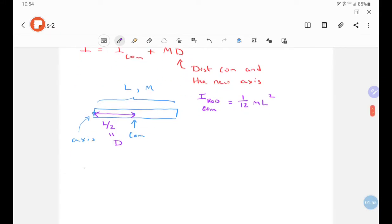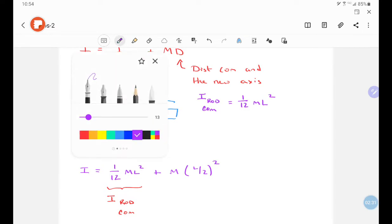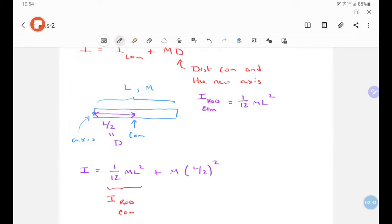And so if I take those expressions and plug them in, we have 1/12 ml squared, this is the moment of inertia for the rod about its center of mass, and we're going to add to that md squared where d is l over 2, and that is the distance between the center of mass and the new axis.